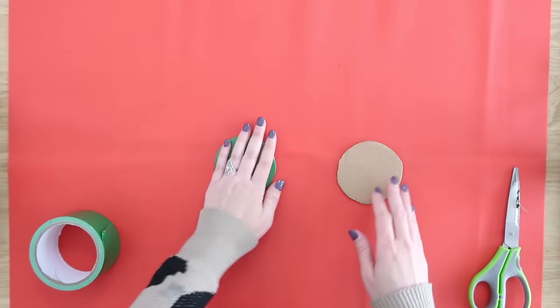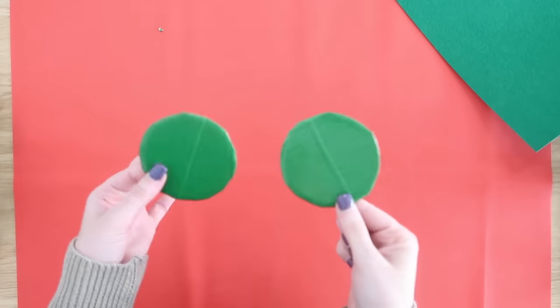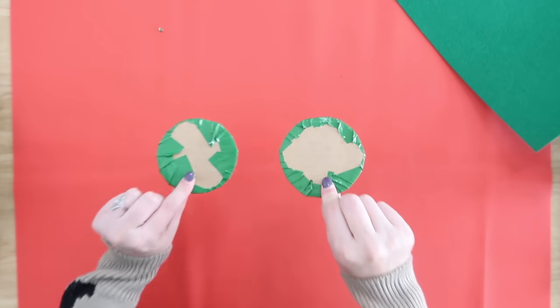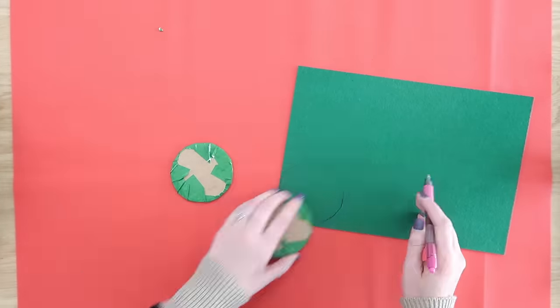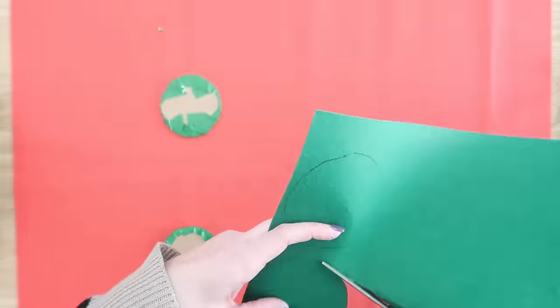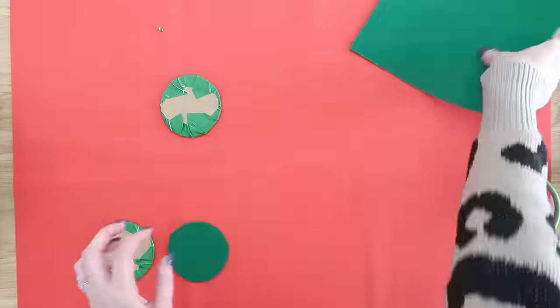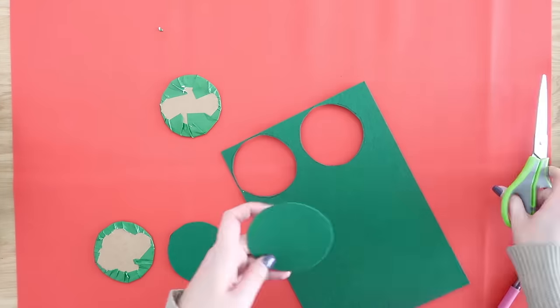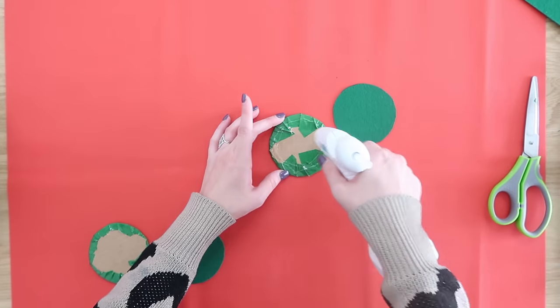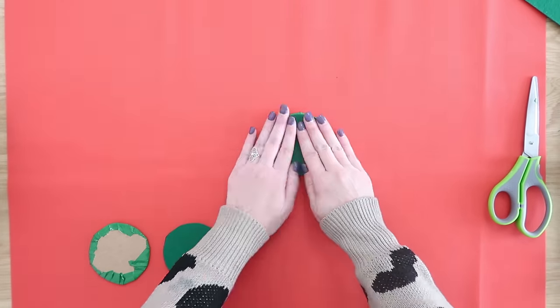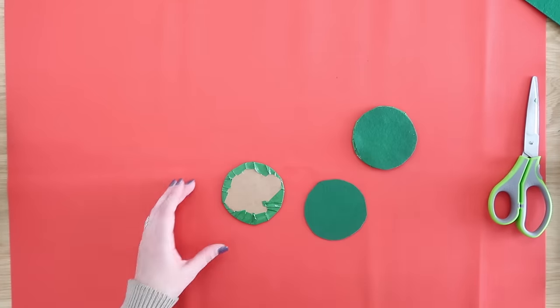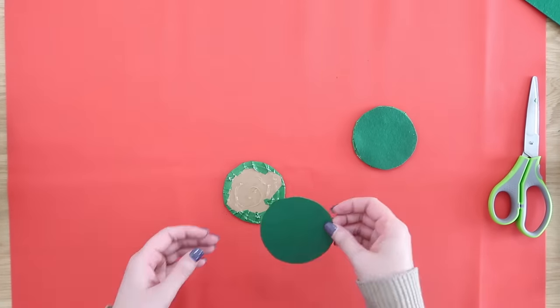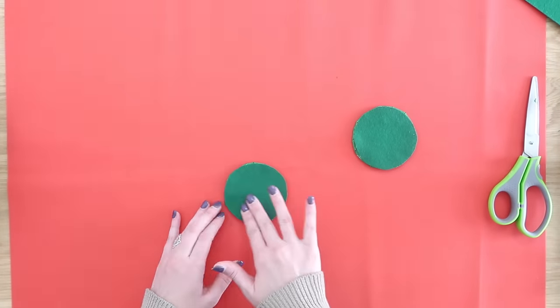Do that to all your coasters and then we are going to put some felt on the other side. It's going to do a couple things. It is going to add a nice finished look, but it's going to give you a two option coaster at the same time. Take some hot glue, glue your felt onto the bottom.